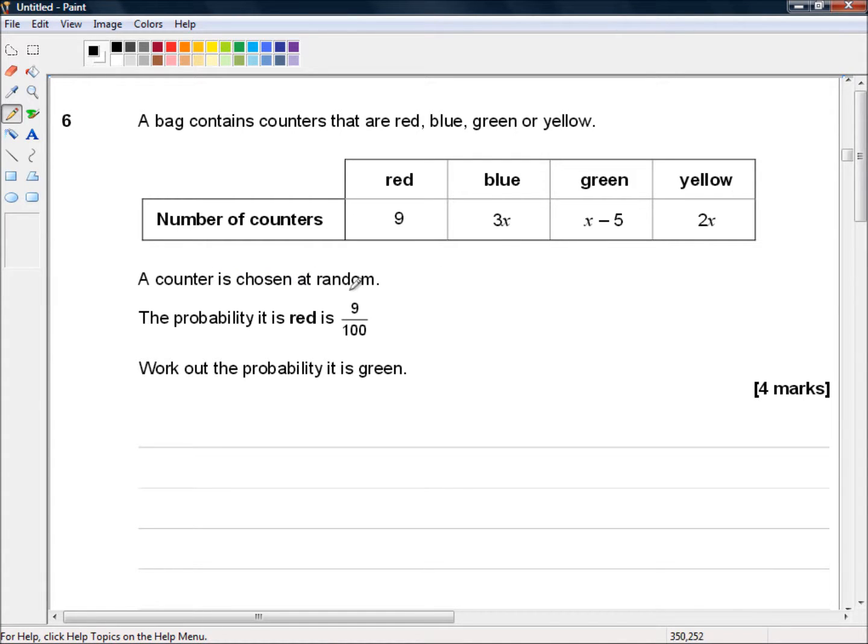A counter is chosen at random. The probability it is red is 9 out of 100. Work out the probability it is green.